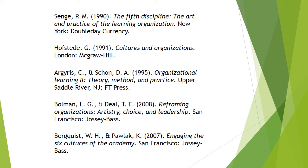There are many examples and models of organizational culture. In addition to Schein, models have been developed by Senge, Hofstede, Argyris and Schön, Berquist and Pollock, and Bolman and Deal. Each of these models explores organizational culture in a different way and all contribute to our understanding of organizations. However, three of these models deserve more attention as we discuss the culture of higher education.